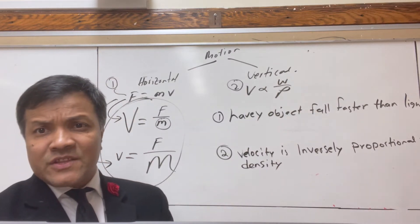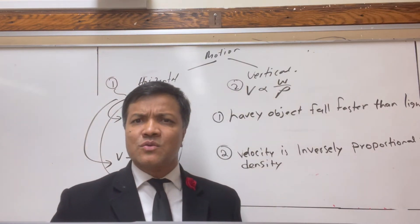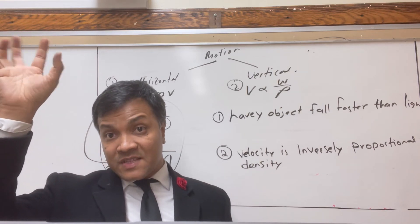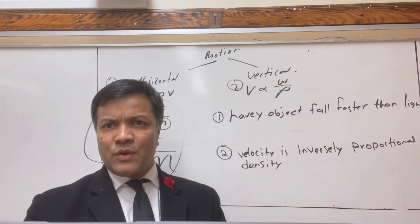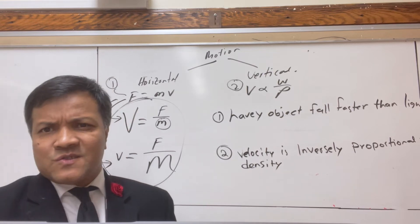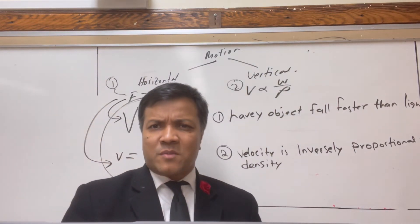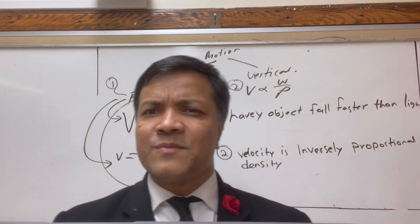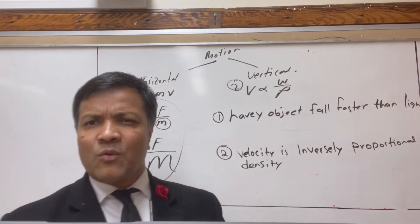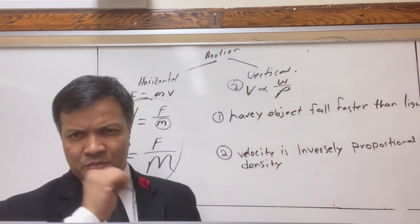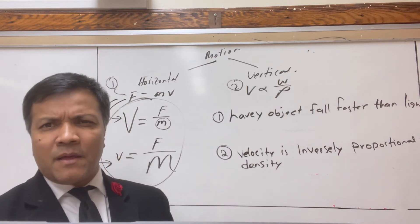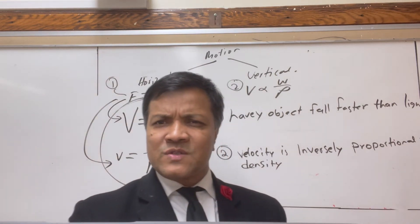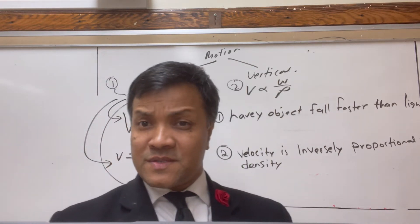What is ether? According to Aristotle, heavenly bodies like planets and stars are made of ether. Now we know nothing is made of ether because there is no ether. The Michelson-Morley experiment disproved it in 1887. Michelson won the Nobel Prize — he was the first American to do so. Morley was his student.